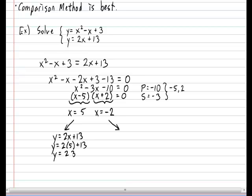For the other x, y equals again I'm going to use the linear rule 2x plus 13. So let's plug in the other x. y equals 2 multiplied by negative 2 plus 13 giving you a y value of 9.